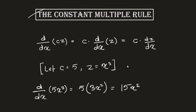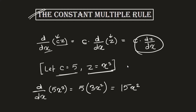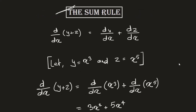The constant multiple rule says: to find the derivative of c·z with respect to x, where c is a constant, you take c out of the derivative and then differentiate z alone. For example, if c = 5 and z = x³, the derivative of 5x³ is found by taking 5 out and applying the power rule to x³, giving 3x². So 5 × 3x² = 15x².